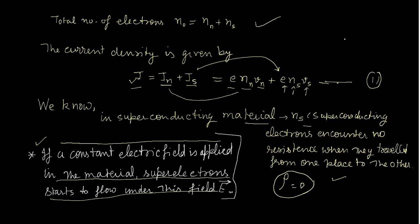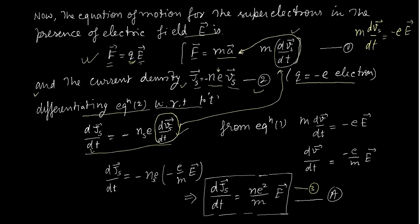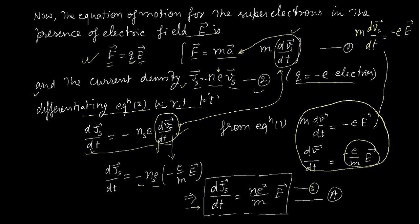We assume that super electrons do not face any barrier inside the superconductor, and when we apply an electric field, the super electrons start to flow under that electric field. Applying the equation of motion for the super electrons: dv_s upon dt equals minus e upon m times E, where n_s is the number of super electrons, e is the charge, m is the mass, and E is the applied electric field. This gives us London equation number one.